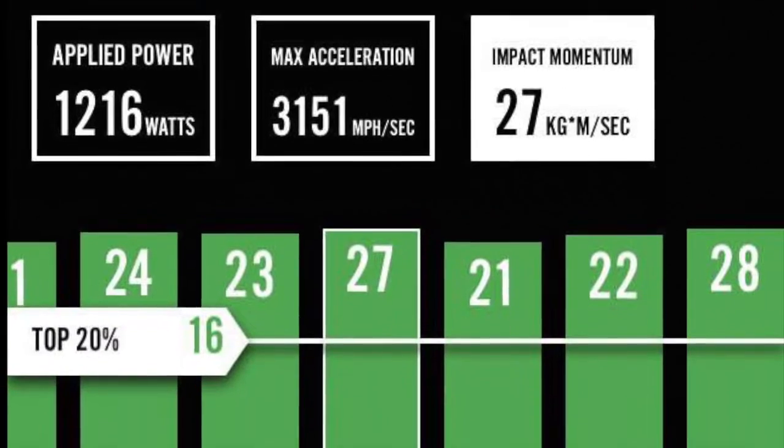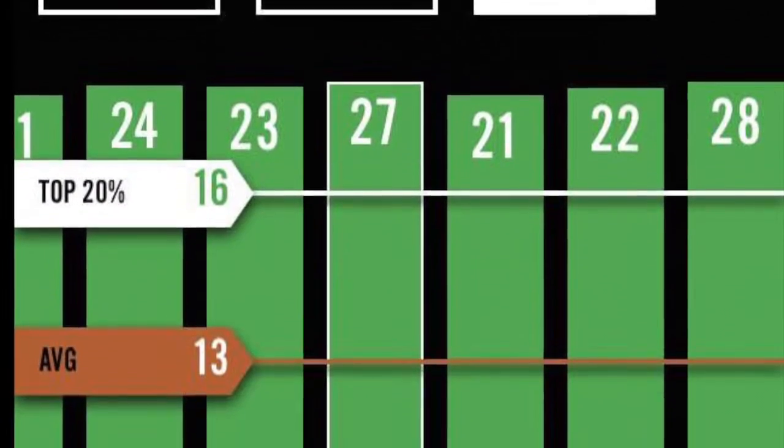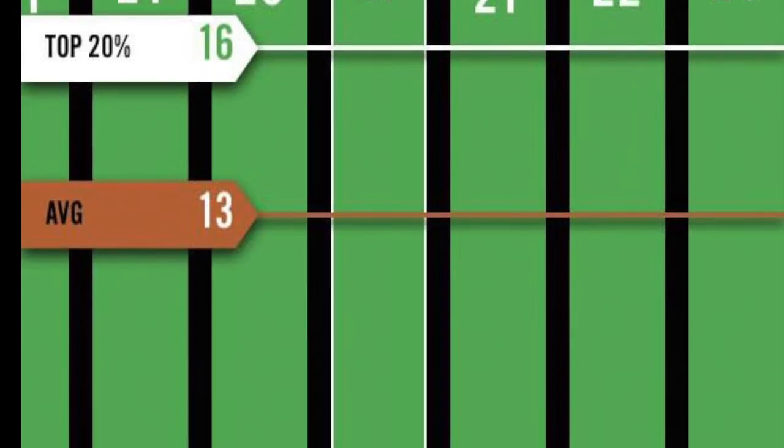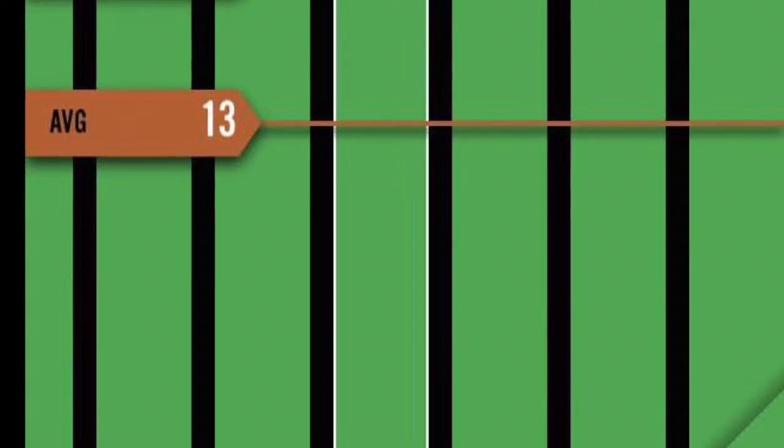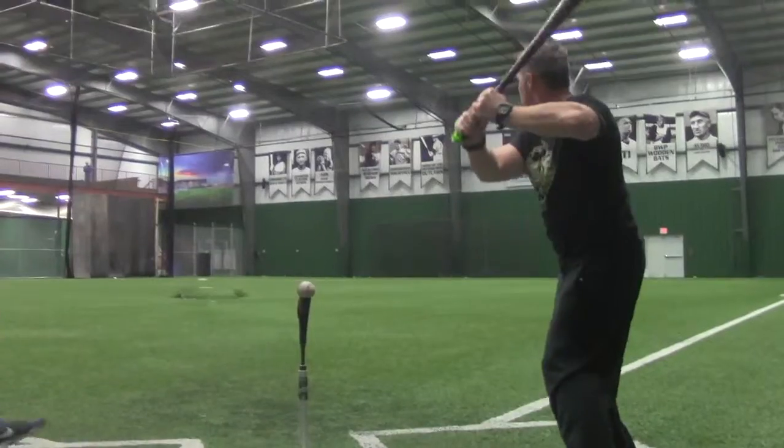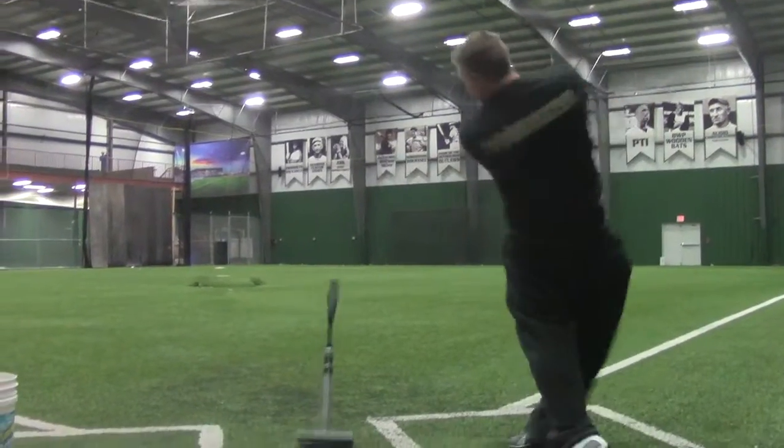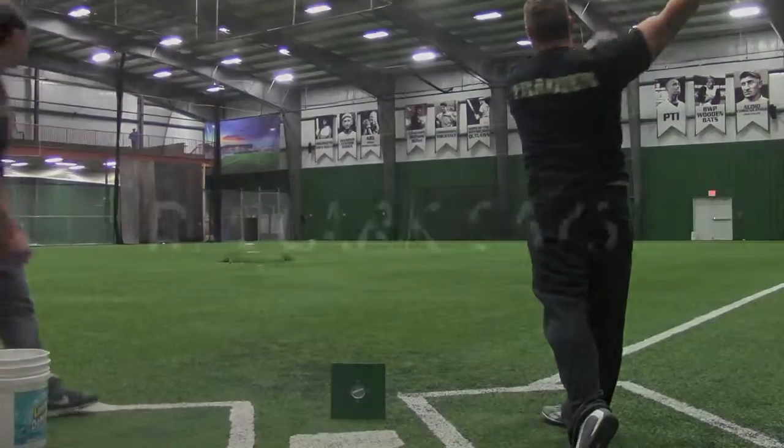My ability to generate high impact momentum is basically a combination of the bat speed and the size of the bat. So if I can generate more momentum at the point of impact, the ball is going to go faster off my bat and it's going to go further.